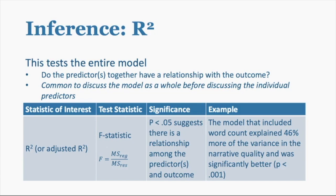The null model here is just no predictors — essentially it's saying how well does just knowing the mean of our outcome help us understand the outcome. So saying it explained 46% more of the variance in narrative quality and was significantly better than the null model means this model is explaining 46% of the variance. We can also compare to other models — you can have a model with fewer predictors, add predictors, and compare those models to each other using R-squared.